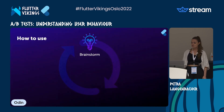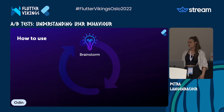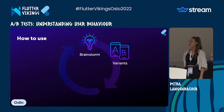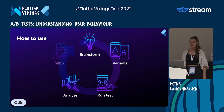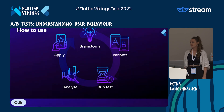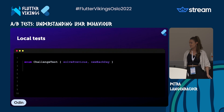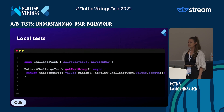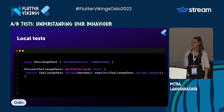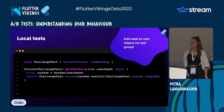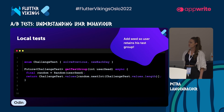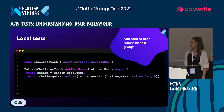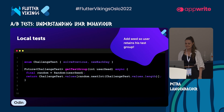So how does this work in general? First, you brainstorm about what you want to change or improve in your app, then you create two or more different variants of the feature. You run the A/B test, analyze the results, and in the end apply the winning version for all your users. If you want to implement this locally, it's quite simple: define different variants, randomly assign a variant to a user, and make sure the user stays in the same test group for the whole period the test is running by adding a user seed.